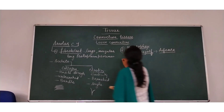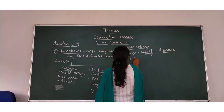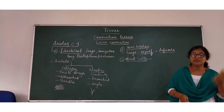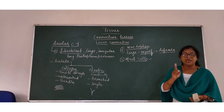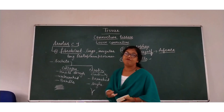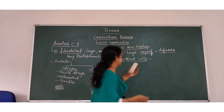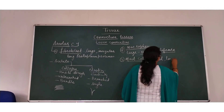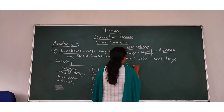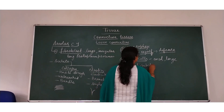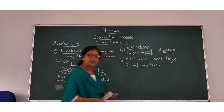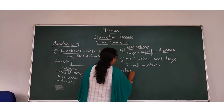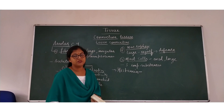The third type of cell is mast cells. Mast cells are large, oval in shape, and they secrete three types of important substances. The first substance is histamine.